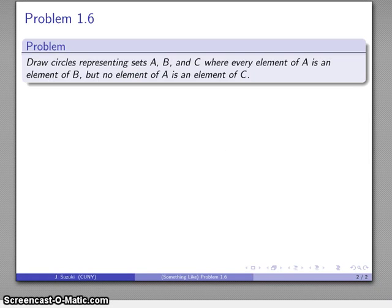Let's take a look at something similar to problem 1.6. This is to draw circles representing sets where a certain group of conditions has to be met. In this particular case, every element of A is an element of B, but no element of A is an element of C.